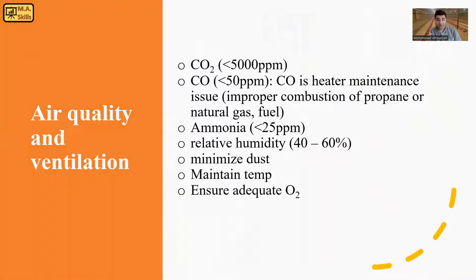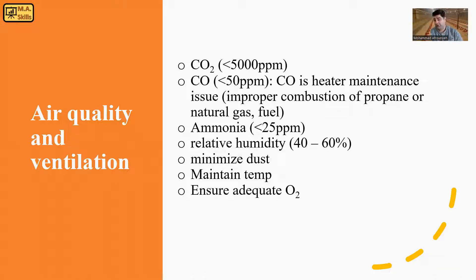Talking about air quality and ventilation, we have some standards. The concentration of carbon dioxide should be less than 5,000 ppm, or parts per million. Carbon monoxide should be less than 50 ppm. Carbon monoxide is not a ventilation issue — it is a heater maintenance issue, because improper combustion of propane or natural gas will produce carbon monoxide in the barn, and we need to prevent that.